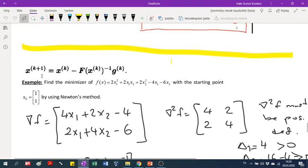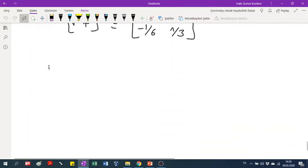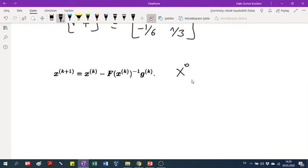Let me remind you the formula for Newton. This is the formula for Newton method. So we will apply that. We have the x0 point. We have x0 point as (1,1).